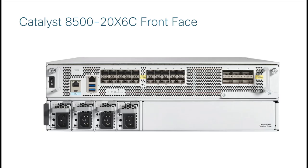Let's now take a tour of the new C8500 20X 6C platform. Here we are looking at the front side of the chassis. You can see that this is a 3RU chassis, which is half the size of an ASR1000 6X chassis, or one-third the size of an ASR1000 9X that were previously required for high-density 100 gigabit Ethernet.